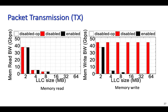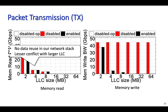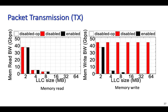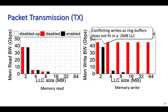The graph in the slide shows memory read and write bandwidth utilization when the server transmits packets. Since there is no data reuse in our network software stack, DDIO-enabled and disabled systems show the same memory read bandwidth utilization. Note that since DDIO does not limit LLC usage in the transmission path, as soon as LLC sizes surpass 3 MB, we start seeing dramatic drops in memory write bandwidth utilization.